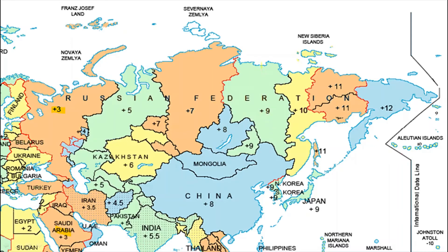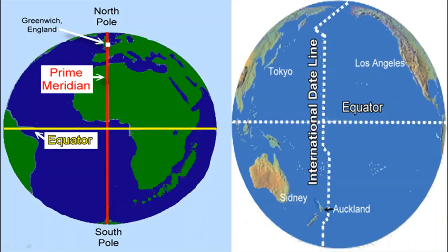The International Date Line is at 180 degrees of longitude. As you can see, it is a zigzag line — not a straight line like the Prime Meridian. It is zigzag to avoid cutting countries in half. Countries located on this line would otherwise be split, so they have chosen to be on one side of the date line or the other as per their convenience and trade relations. That's why this line is not straight.